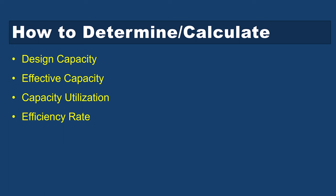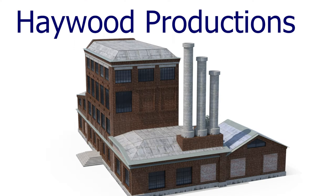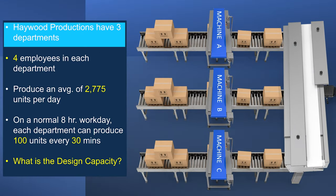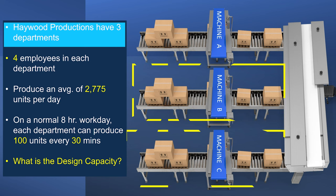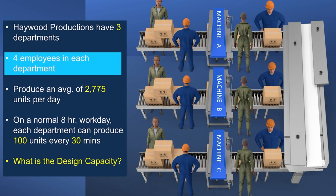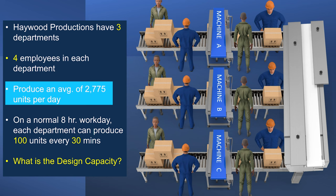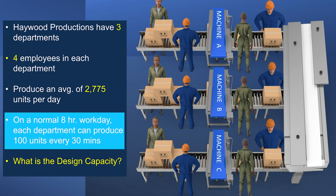Now let's look at some ways to calculate design and effective capacity, as well as capacity utilization and efficiency rate. Haywood Productions: this facility has three conveyor belts, one for each department — Department A, Department B, and Department C. Each department has four employees, and on average we produce 2,775 units per day. On an eight-hour workday, each department can produce 100 units every 30 minutes.